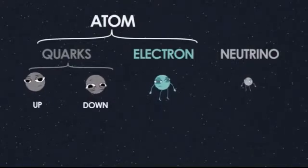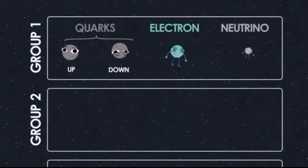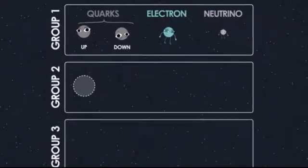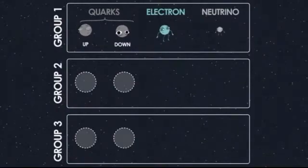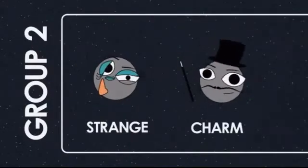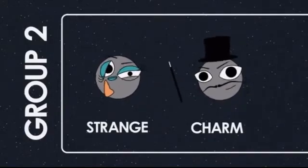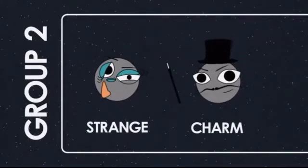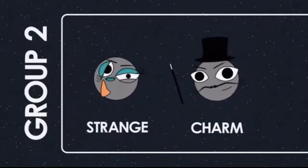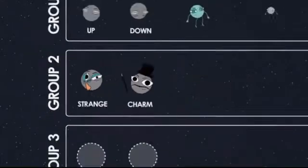There are actually two more groups of four particles like our original group, except heavier — they have more mass. So there are actually six quarks, not two. There's the up and down quark forming a pair, and then another pair: the strange and charm quark. Why are they called strange and charmed? These names have very little to do with any properties of these particles — they're just names to keep track of them, which should give you a hint of how complicated this is going to get.